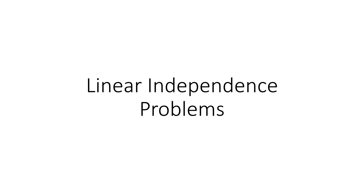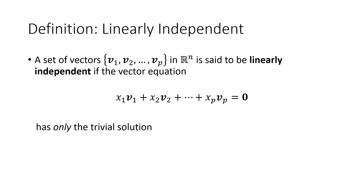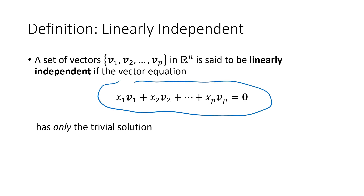We're going to work through some problems reviewing the ideas behind linear independence. First, let's go back over the definition. When we have a set of vectors in R^n, we say that those vectors are linearly independent if the vector equation x1·v1 + x2·v2 + ... = 0 has only the trivial solution.